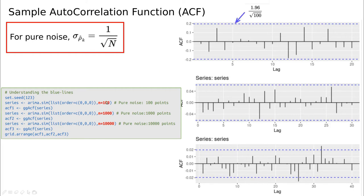If you take the square root of 100, this is going to be 10, so 1 divided by 10 is 0.1. So 1.96 divided by 10 is going to be 0.2 more or less. So this dashed blue line is going to be the upper boundary of pure noise with 100 realizations. As you can see, if you change the number of simulations, if you go to 10,000, the square root of 10,000 is 100 actually, so this is 0.02.